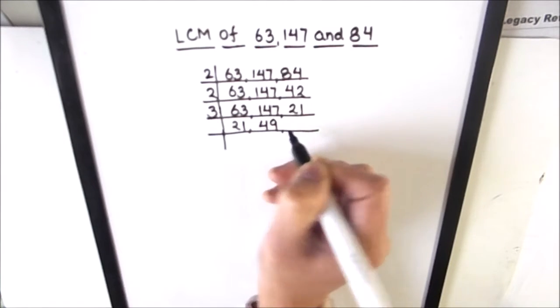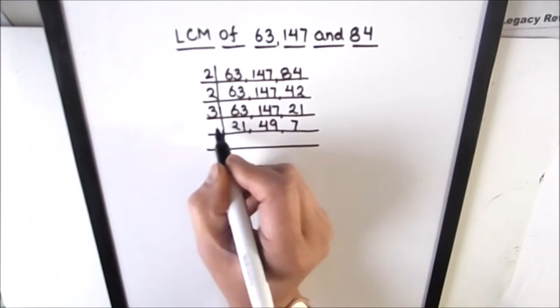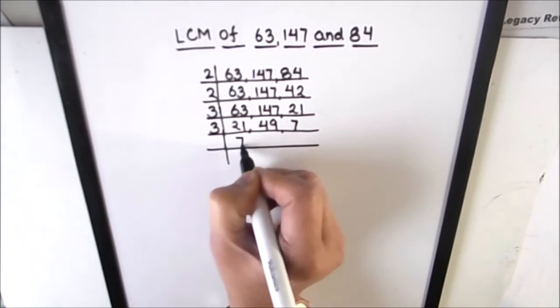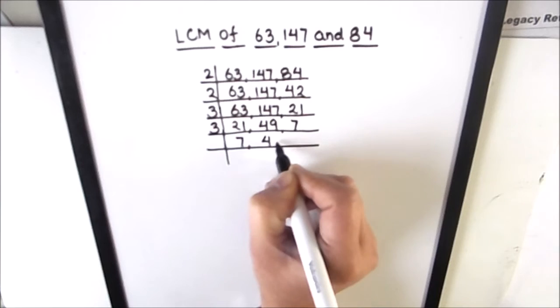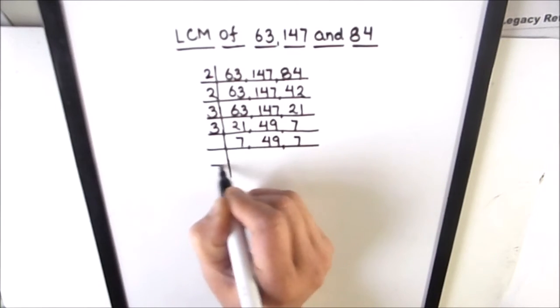Now we'll use 3 to divide 21. 3 times 7 is 21. 49 is as is and 7 is as is. Now 7 is a prime number, it is only divisible by 7, so we'll use 7.